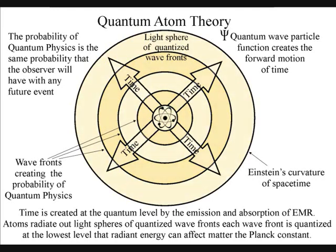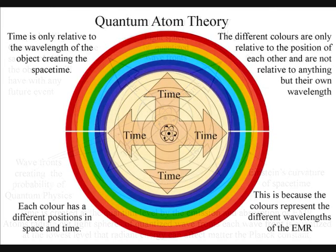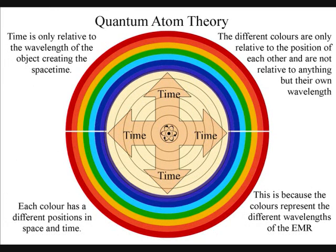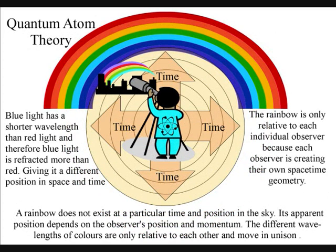Time is only relative to the wavelength of the object creating the space-time. Once again, this can be seen because light of different colours have different wavelengths. Blue light has a shorter wavelength than red light, and therefore blue light is refracted more than red. The different colours will have different positions in space and time, therefore forming rainbows of colour.